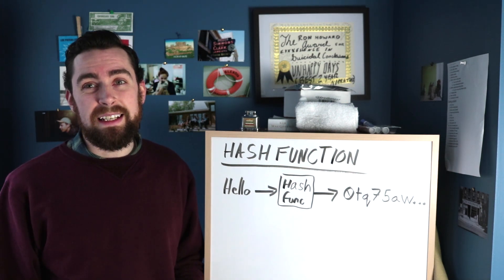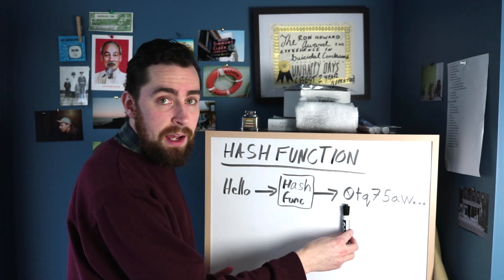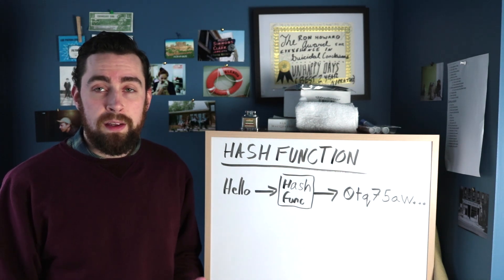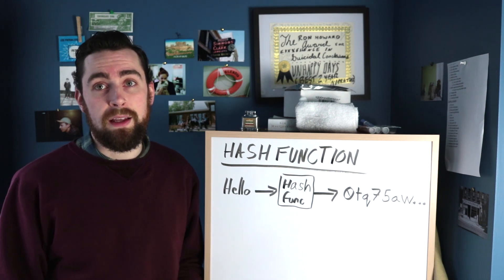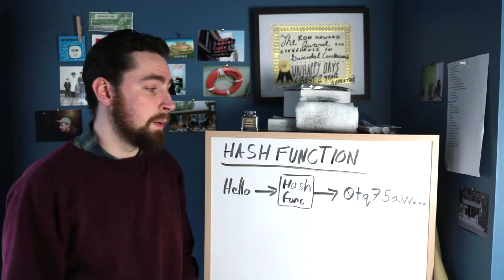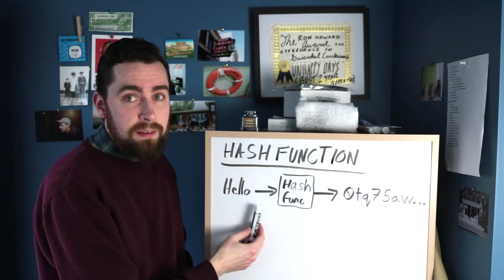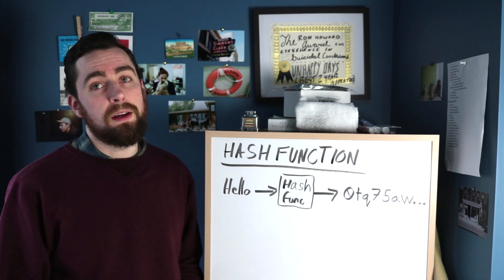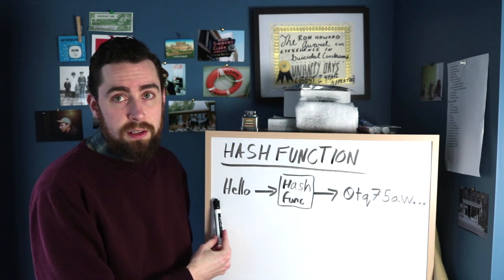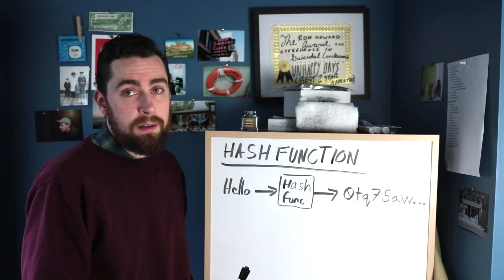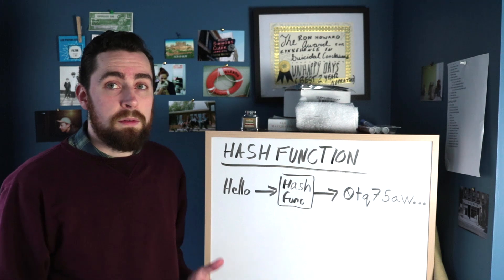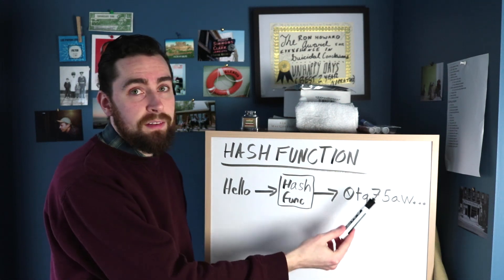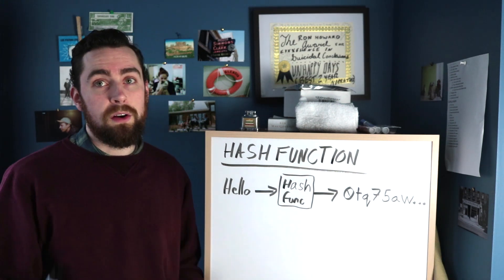Number two, it has to be computationally infeasible to take your hash and try to extrapolate the message from it. It's basically not possible — it's computationally infeasible, meaning there's really not enough computation power in the world to reverse the hash back to the original message. Number three, it has to be deterministic. What I mean by deterministic is every time you take your message 'hello' and put it through the same hash function, it'll come up with the same hash. Do it two days later, a million years later — same hash function, you're going to get the same hash. Same message equals same hash.